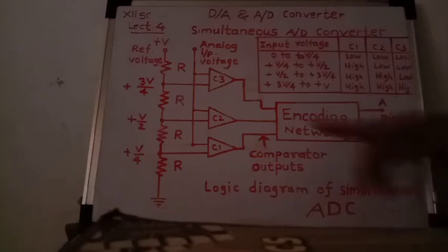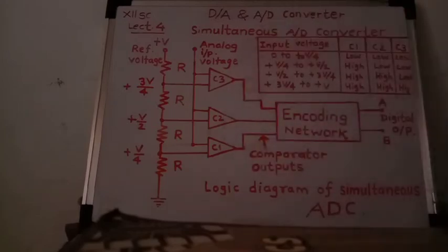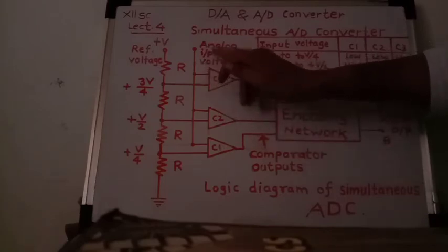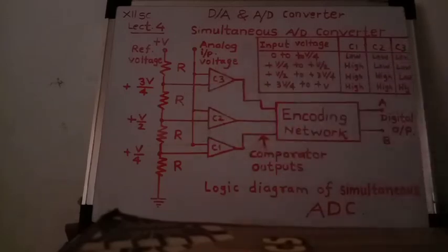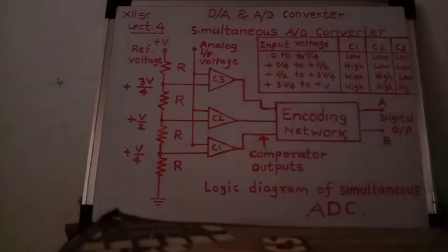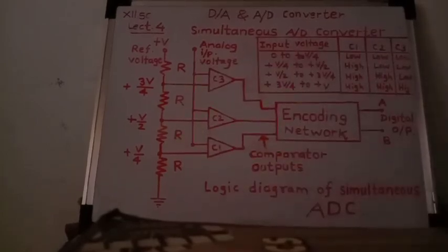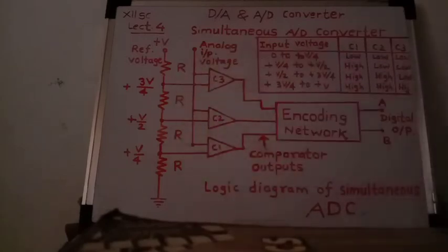In this simultaneous type ADC, three non-inverting type comparators are used. If the analog input voltage is greater than the reference voltage, the comparator turns on and provides a high output. There is a resistive voltage divider consisting of four equal resistors to provide the standard reference voltages.